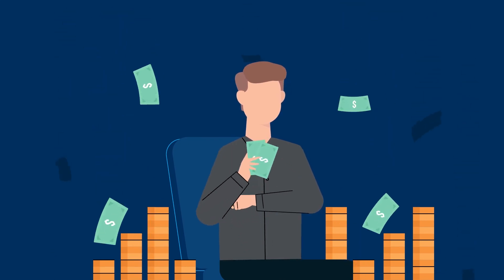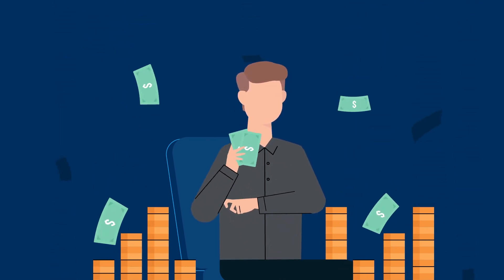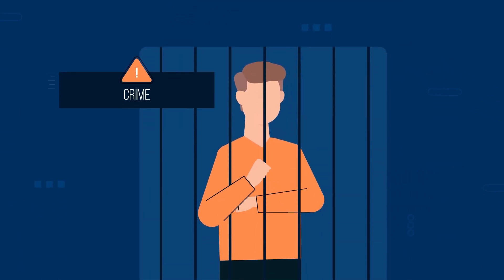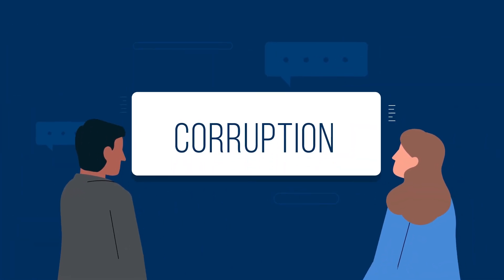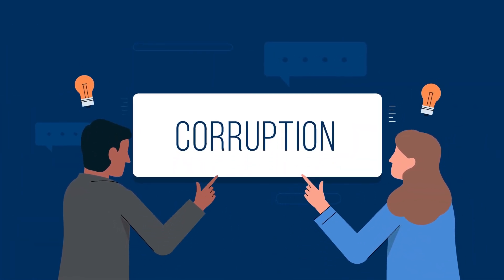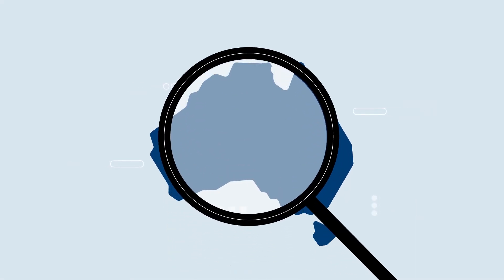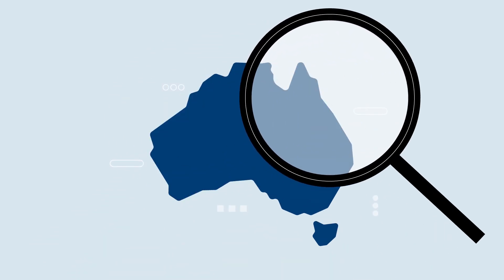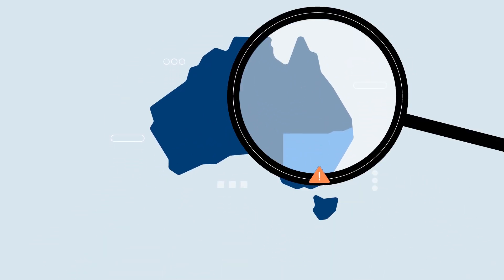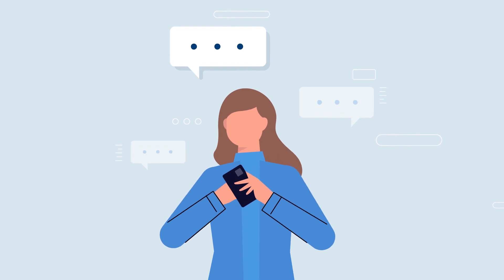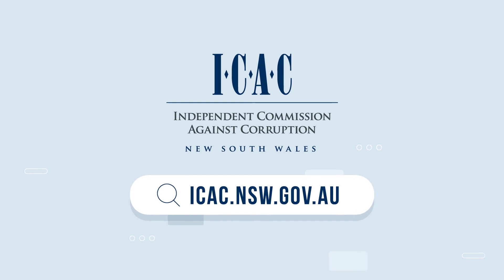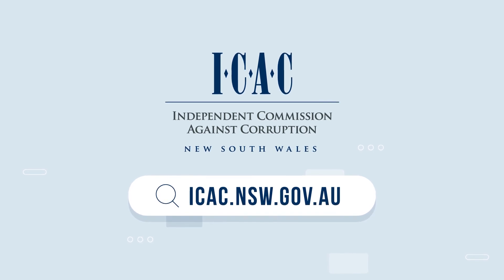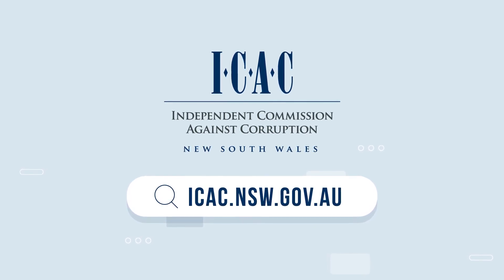Finally, conduct is only considered corrupt if it is serious. Generally, it needs to be serious enough to be a crime, a disciplinary offence or grounds for dismissal. So, now you know what corruption is. If you see or suspect corruption involving the NSW public sector, it is important to speak up about it. For more information, visit the ICAC at icac.nsw.gov.au.